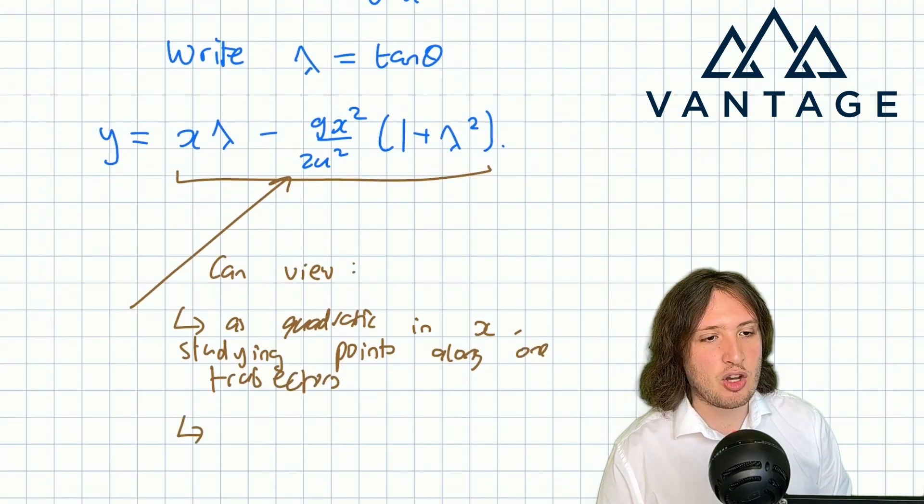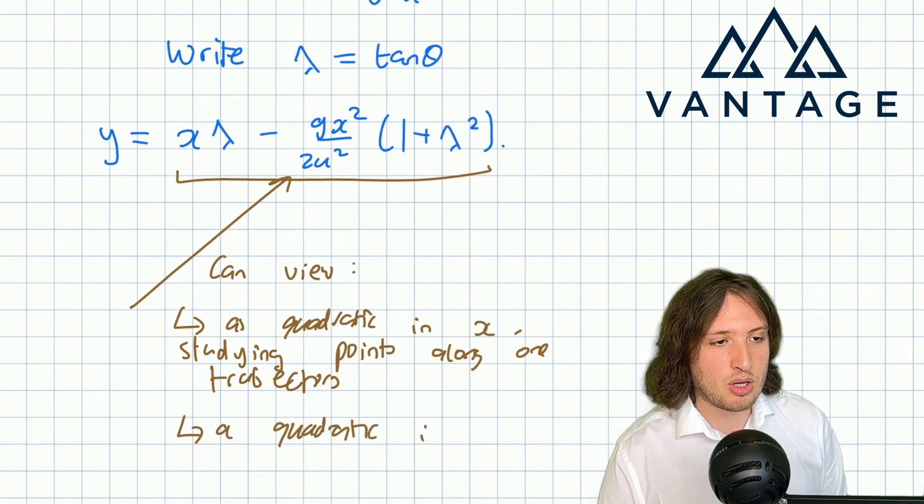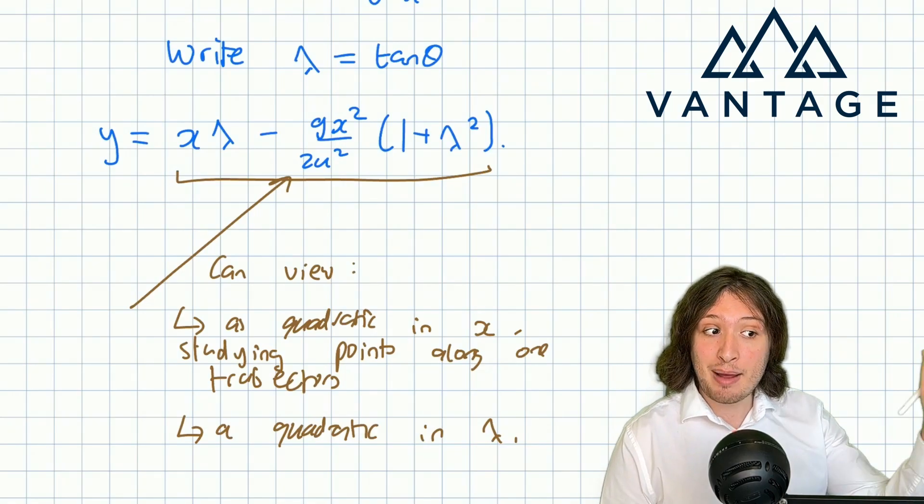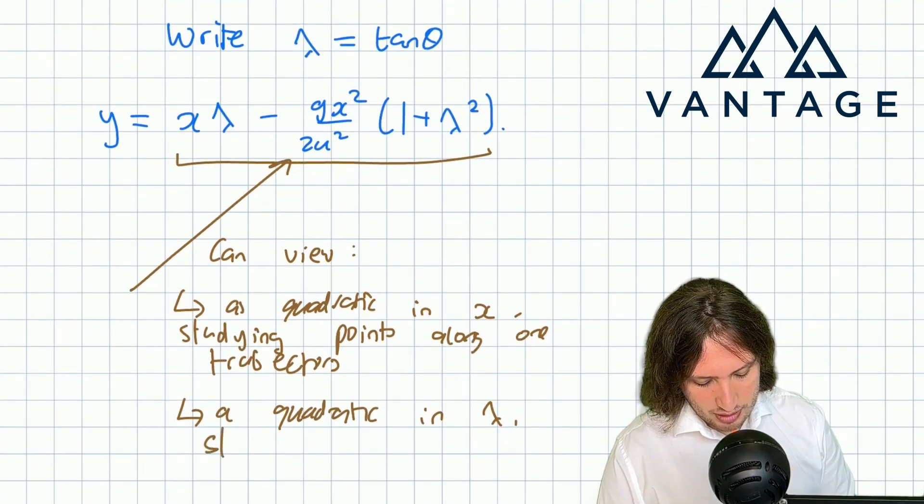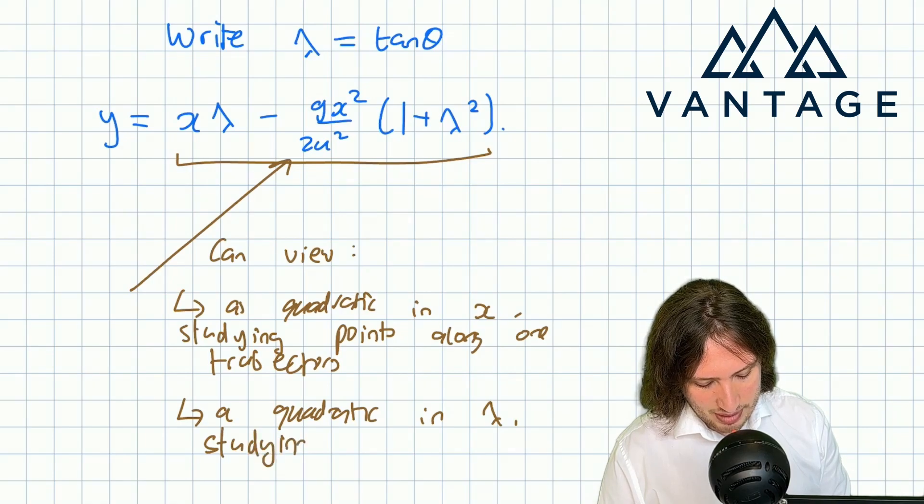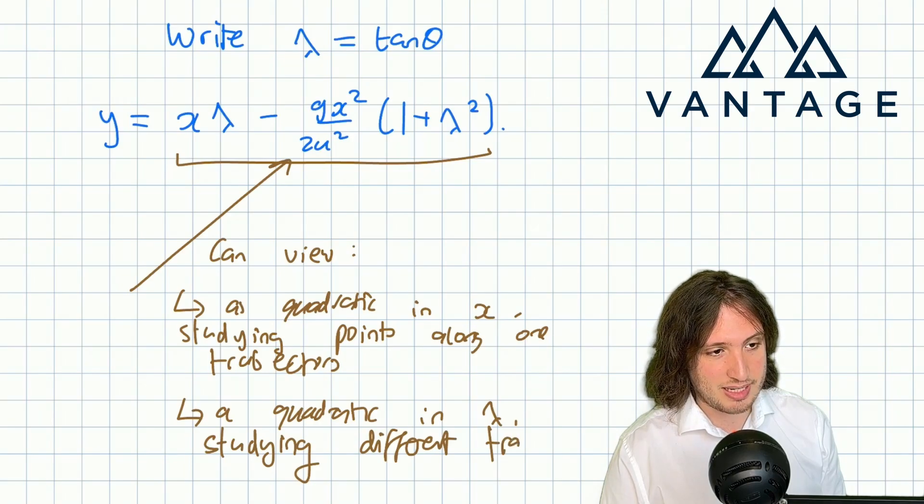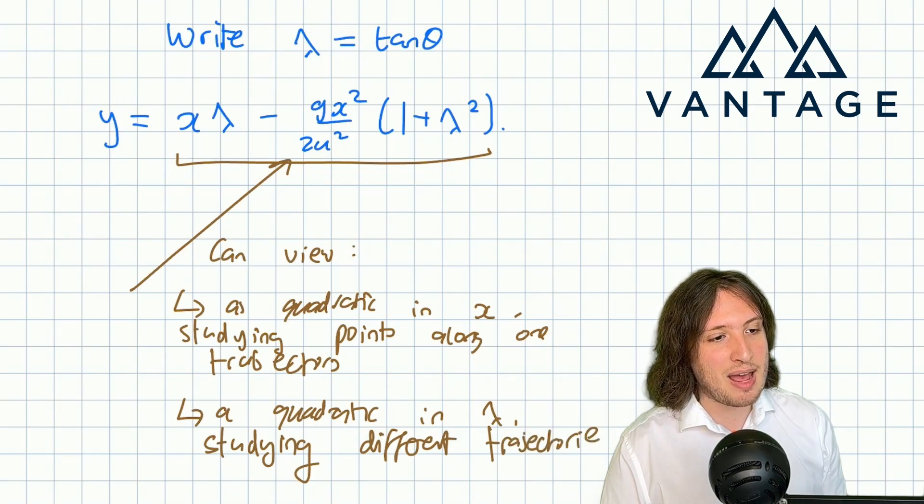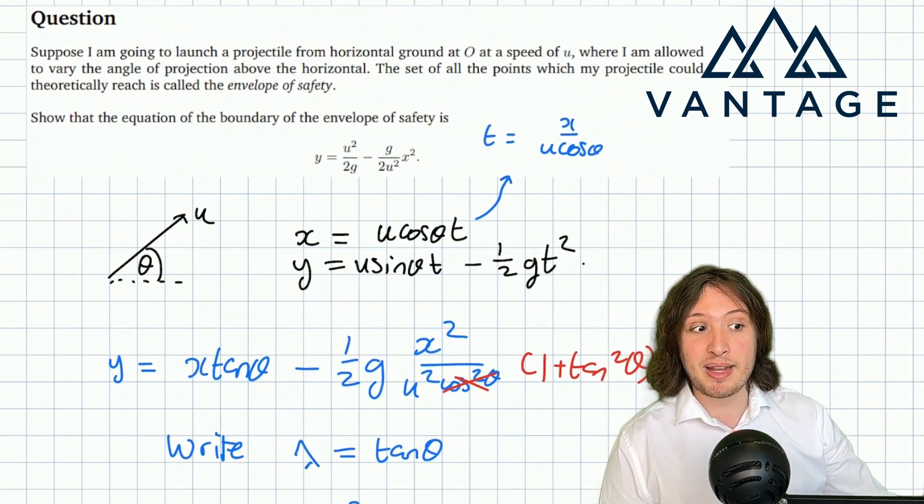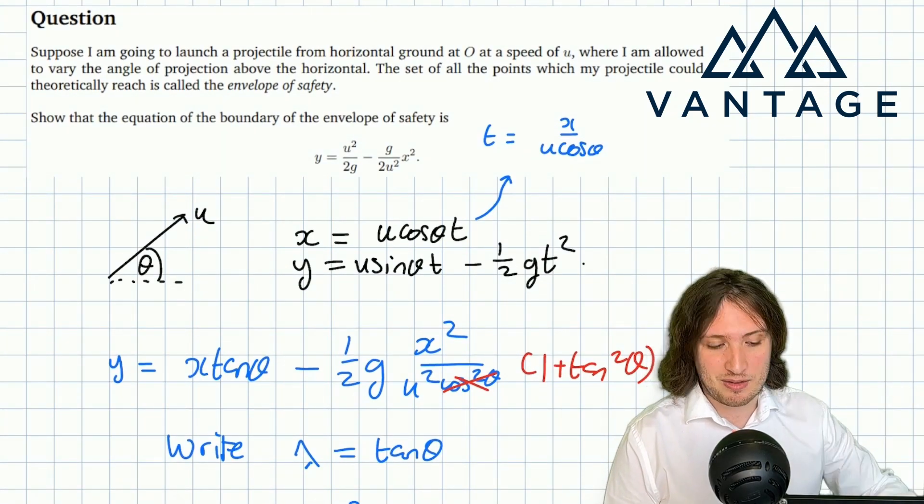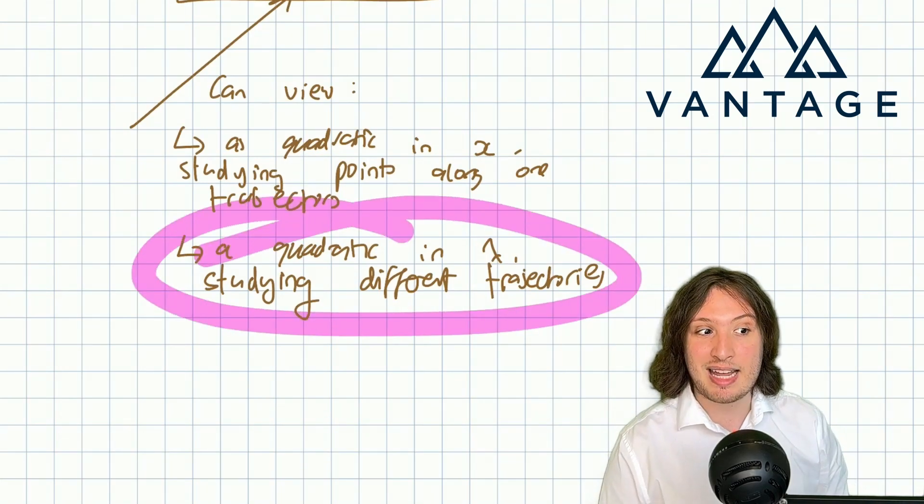But there's nothing to stop me from also considering this as a quadratic in λ. As λ varies I'm looking at different angles of projection, so by viewing it as a quadratic in λ I'm studying different trajectories. Because the envelope of safety is the set of points I can reach across all angles of projection, surely this perspective is the one we'd like to take for this question.